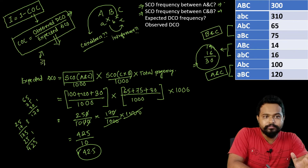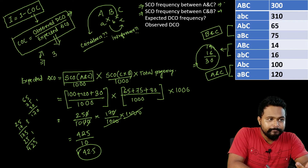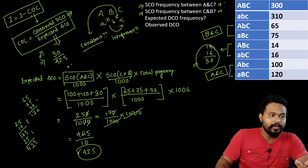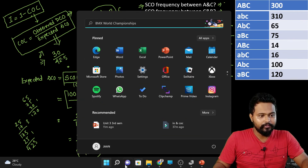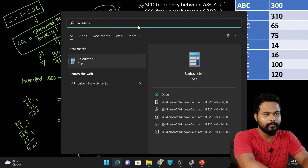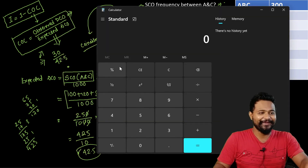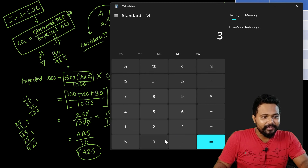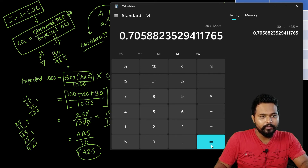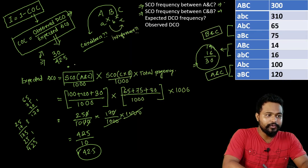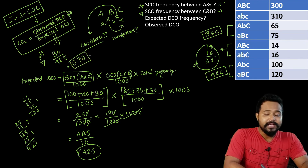Now applying the formula: observed double crossover is 30, divided by expected double crossover of 42.5. Using a calculator: 30 divided by 42.5 equals 0.70. Therefore, the coefficient of coincidence is 0.70.